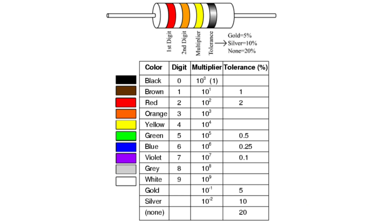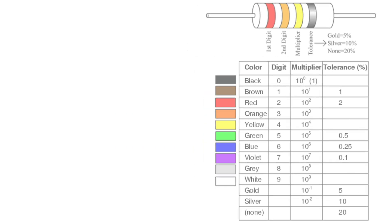Red for 2, orange for 3, yellow for 4, green for 5, blue for 6, violet for 7, gray for 8, white for 9. Gold and silver do not represent any digits. If a color comes as the third part (multiplier), it represents 10 to the power corresponding to its digit value. If gold comes, it represents 10 power minus 1, and if silver comes, it represents 10 power minus 2. In the tolerance level, gold is plus or minus 5% and silver is plus or minus 10%.